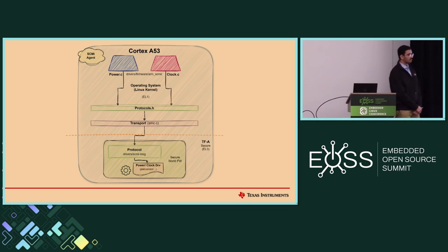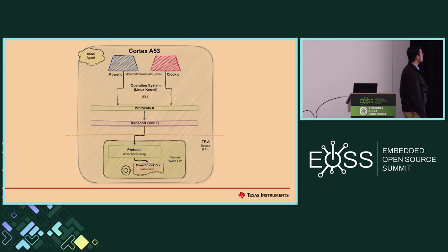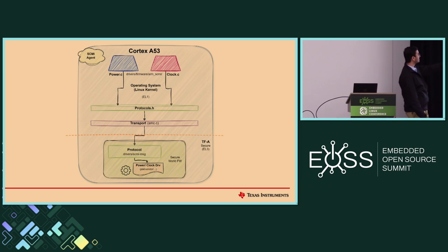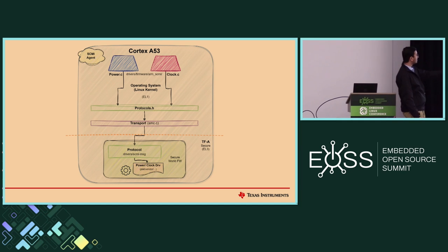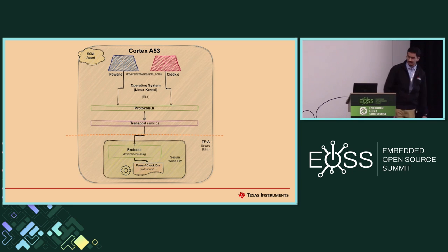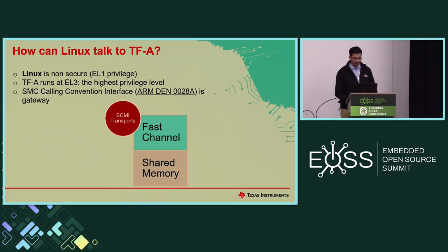Here's a simpler system where you don't have an SCP firmware or a general-purpose MCU — you simply have a device with a Cortex-A core, Linux running on the non-secure side and TFA executing on the secure EL3 level. From Linux we have the same stack I explained earlier, but the transport layer is now going to be SMC. It uses this transport layer to communicate into ARM trusted firmware, and within the same core it switches context. The TFA side has vendor-specific power and clock drivers that do the job of powering on or off clocks and power domains.